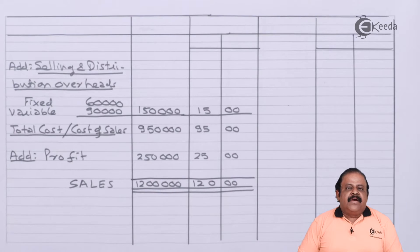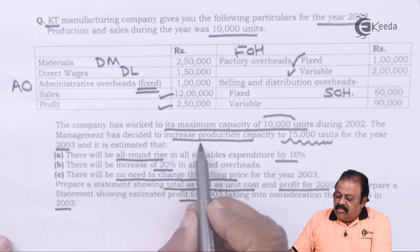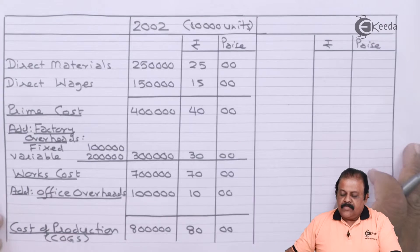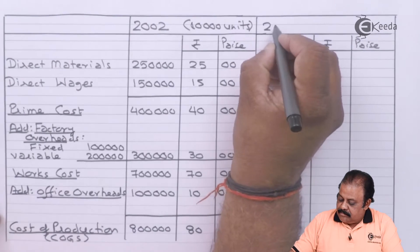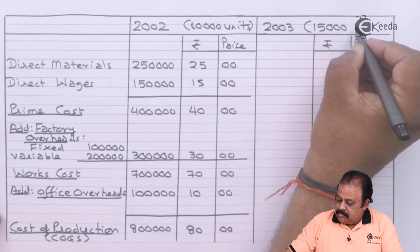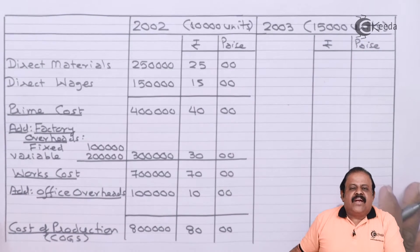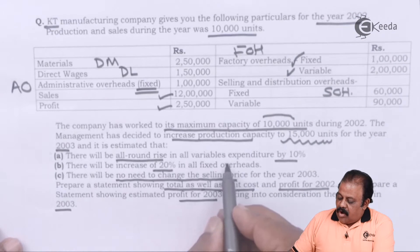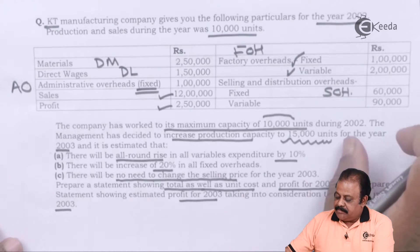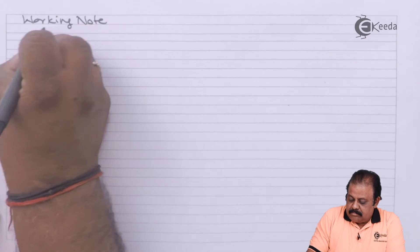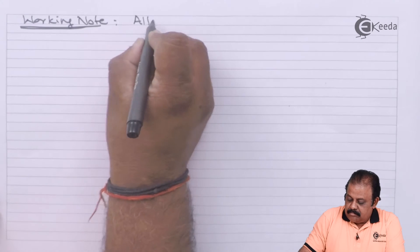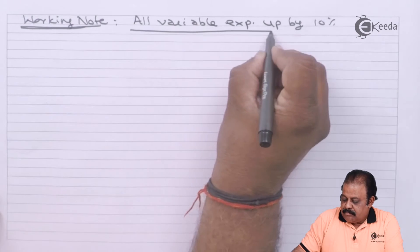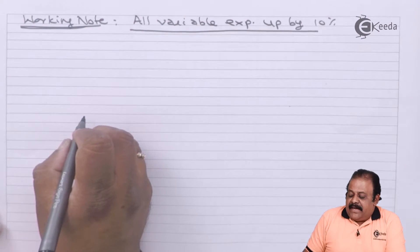The question makes some estimations and asks us to prepare an estimated cost sheet for the next period. In 2003, production capacity increases to 15,000 units — units produced and sold will be 15,000 units. There will be an all-round rise in all variable expenses by 10 percent.